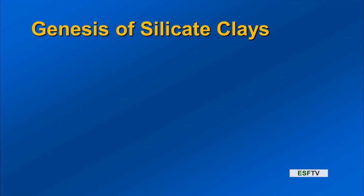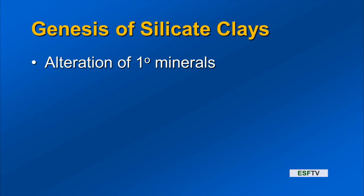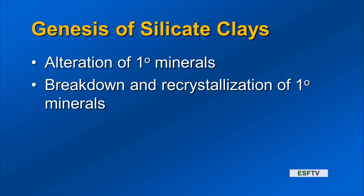We have the clays, we have the chemistry. Getting near the end of the line: how are they made? One way to make a silicate clay is to alter primary minerals — those minerals that have both aluminum and silica, which we reviewed when we talked about parent material. Another way is complete breakdown and recrystallization of primary minerals through very high intense weathering — complete destruction and synthesis of new clays.